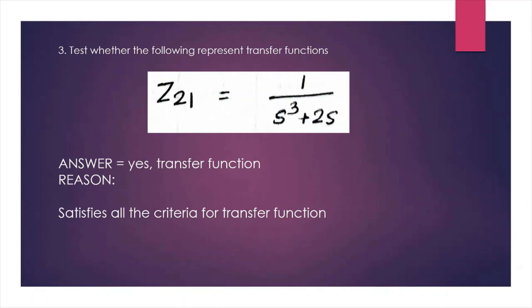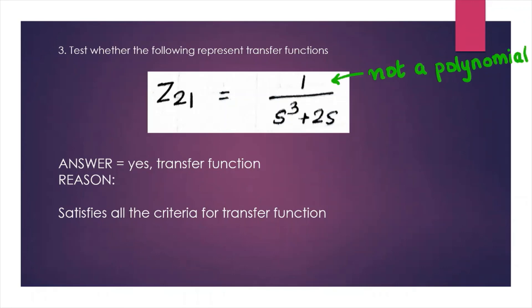For the last example, the numerator does not contain any polynomial terms at all, but that is not a problem. The denominator satisfies all the criteria for a transfer function, so this function is valid.